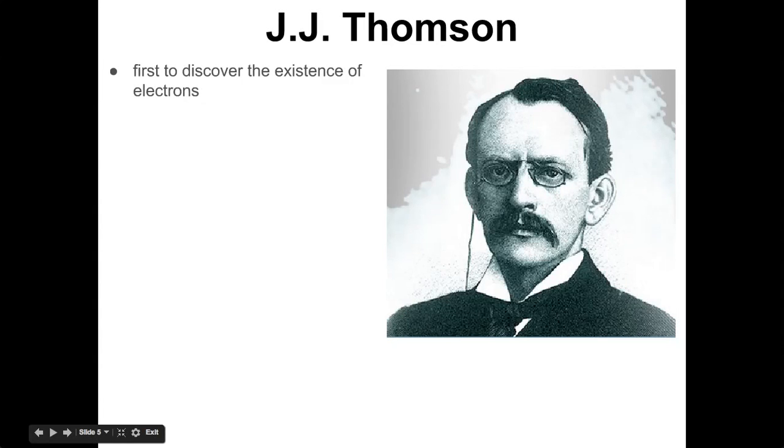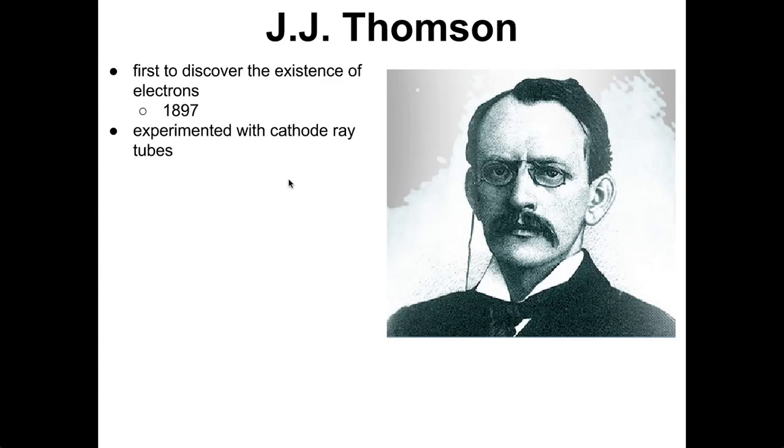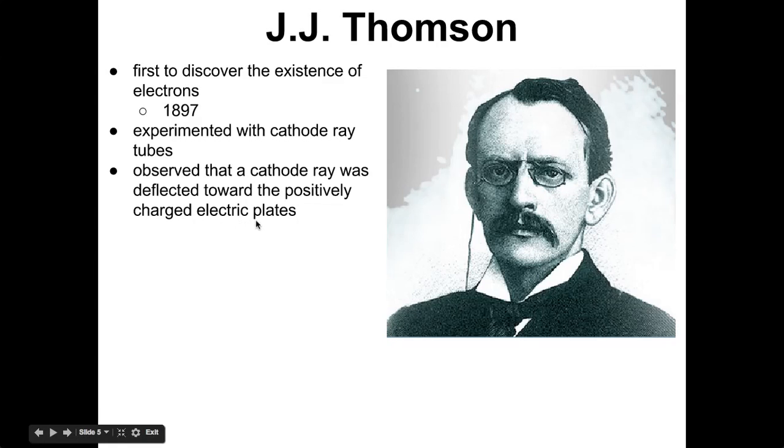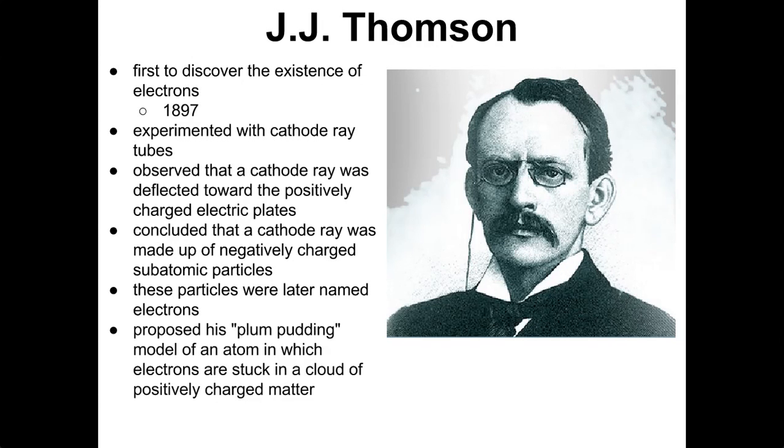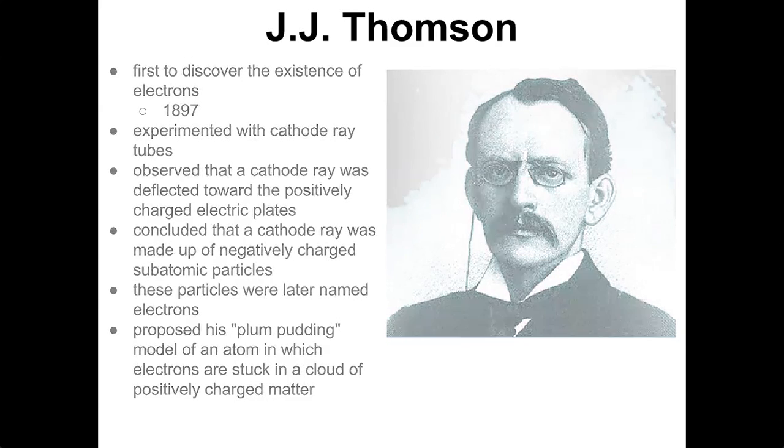Then J.J. Thompson came around. He was the first one to discover the existence of electrons in 1897. And he experimented with these things called cathode ray tubes, which were basically just these electron tubes. But cathode ray, I guess, sounds cooler. So no, I'm just kidding. He just didn't have a name for electrons back then. But they were called cathode ray tubes. And he observed that they were deflected towards a positively charged plate. And he concluded that a cathode ray was made of negatively charged subatomic particles. And then he named them electrons based on this. And the model changed. It started becoming called a plum pudding model, which I'm going to explain in this next slide right here.